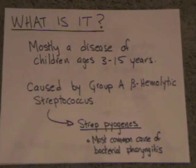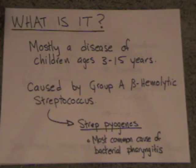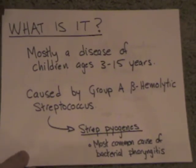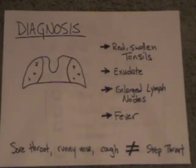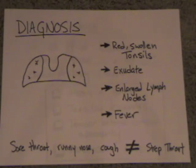There are several different group types of strep — A through G. Group A is the one that causes strep throat most commonly. If you look in somebody's throat, I suggest you spend time looking in people's normal throats so you get an idea of what normal looks like, because then it makes it a lot easier when you see something that's not normal. You may not know exactly what it is, but you can say that's not what normal looks like.